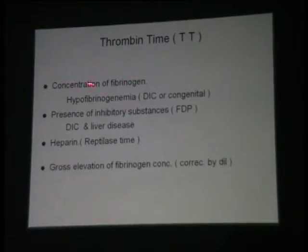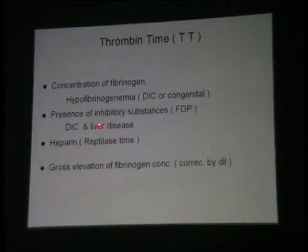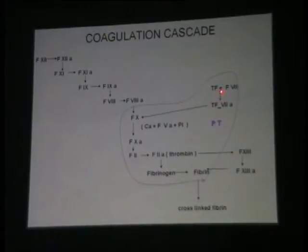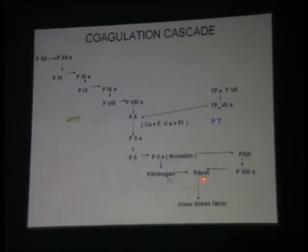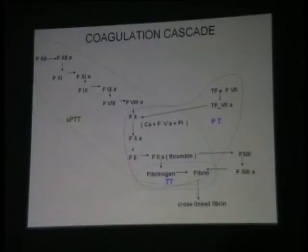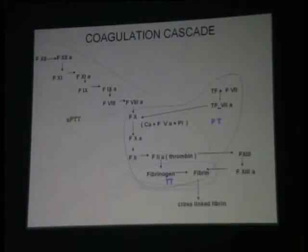Thrombin time usually measures the concentration of fibrinogen for a number of reasons. If prothrombin time is normal, APTT is normal, and thrombin time is also normal, then all your coagulation factors are present — except factor 13. You have tested for everything: PT, APTT, thrombin time, but you have not tested for factor 13.